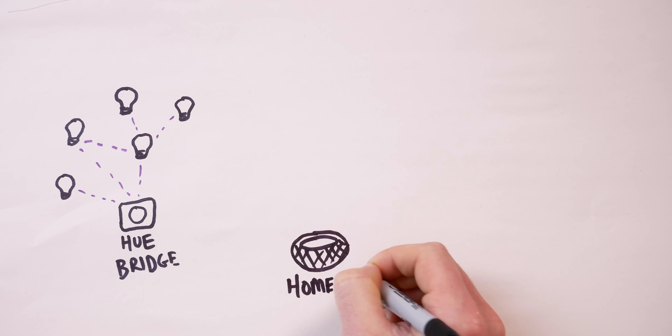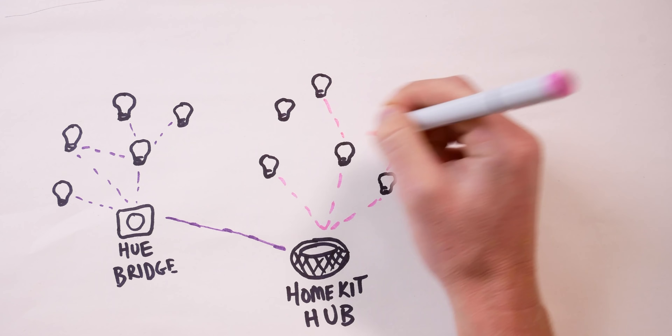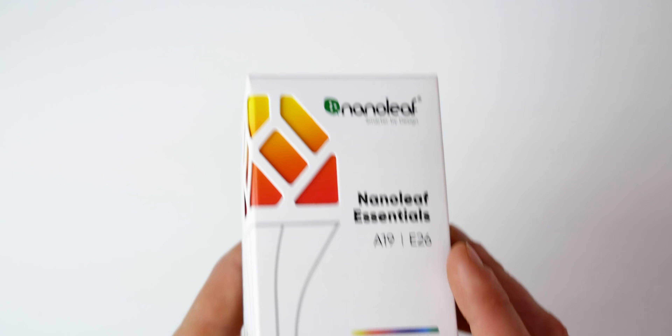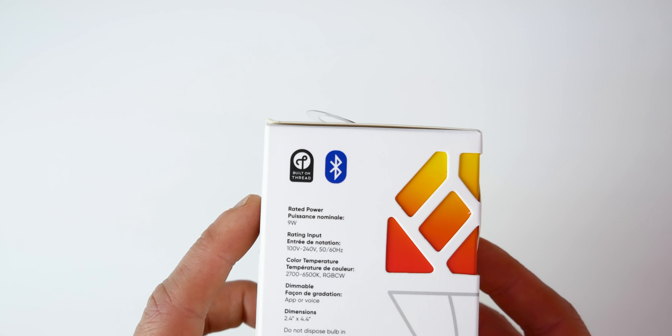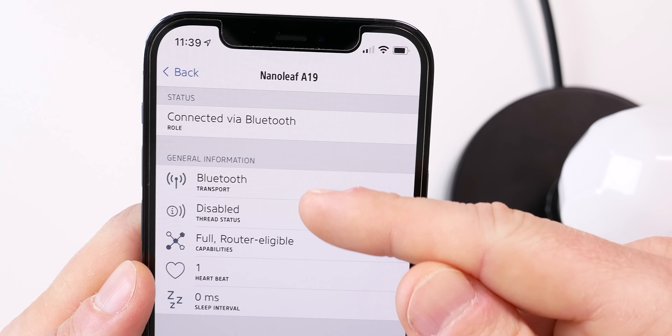All you need to connect your Thread devices is what's called a border router — and that's where the HomePod mini comes in. The HomePod mini acts as a Thread border router, meaning you can connect your Thread-enabled smart devices directly to it. The HomePod mini is the first HomeKit hub with this capability, and I assume future iterations of the Apple TV and the big HomePod will also include Thread support. Also worth noting: all current HomeKit accessories that support Thread must also support Bluetooth, so if you don't have a HomePod mini you can still connect them via Bluetooth.